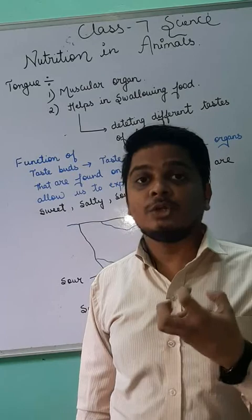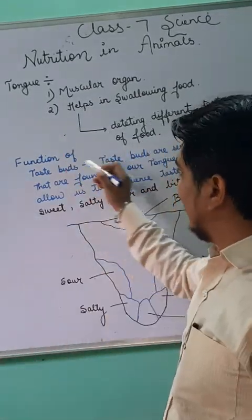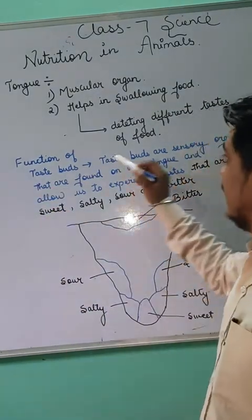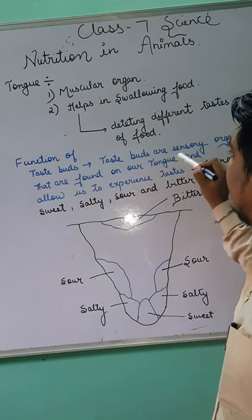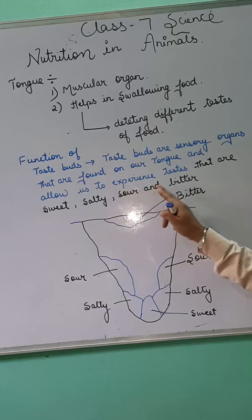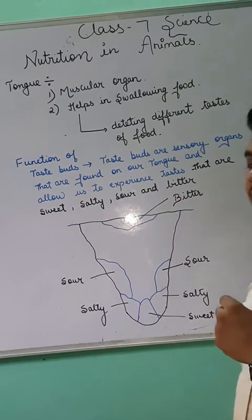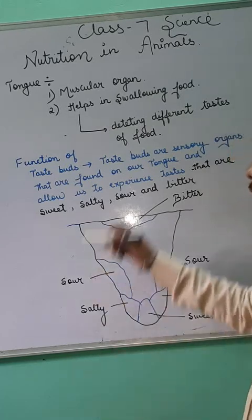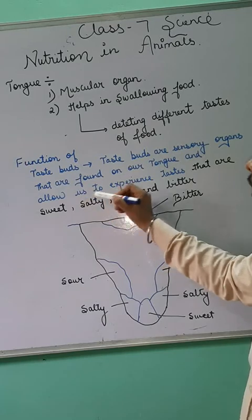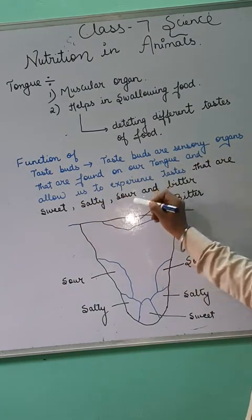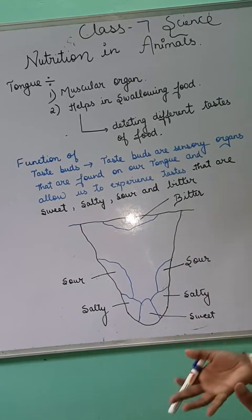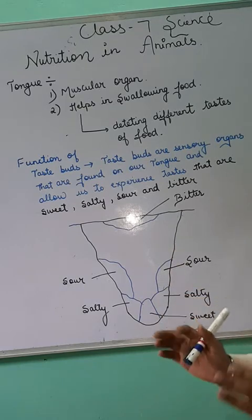The tongue helps in tasting food with the help of taste buds. Taste buds are sensory organs that are found on our tongue and allow us to experience tastes that are sweet, salty, sour, and bitter. From an examination point of view, it can be asked: what is the function of taste buds? They are sensory organs found on the tongue that allow us to experience tastes — sweet, salty, sour, and bitter.